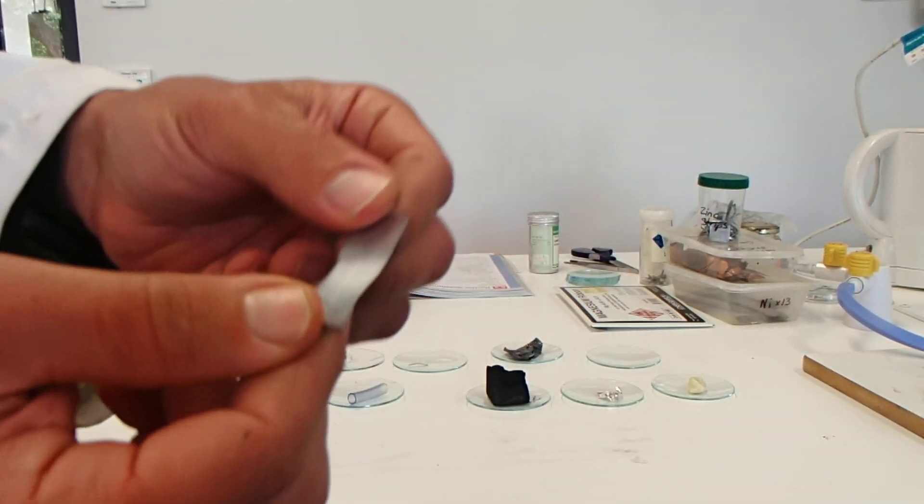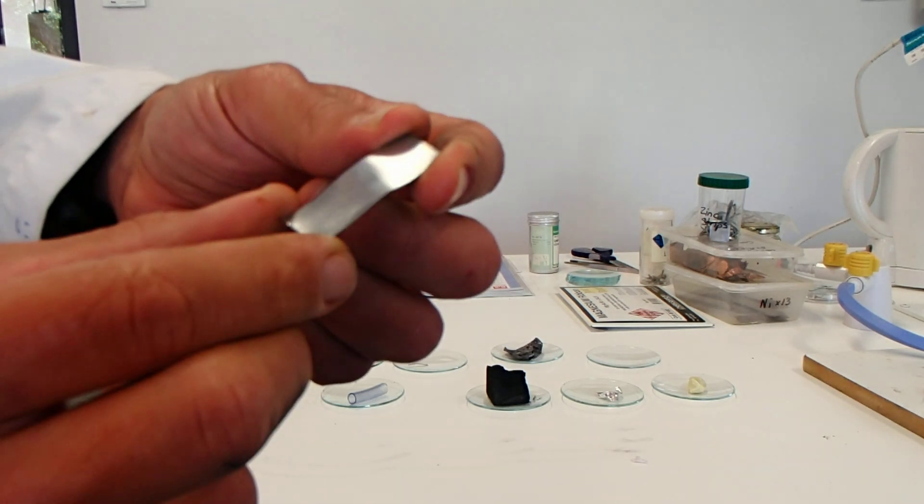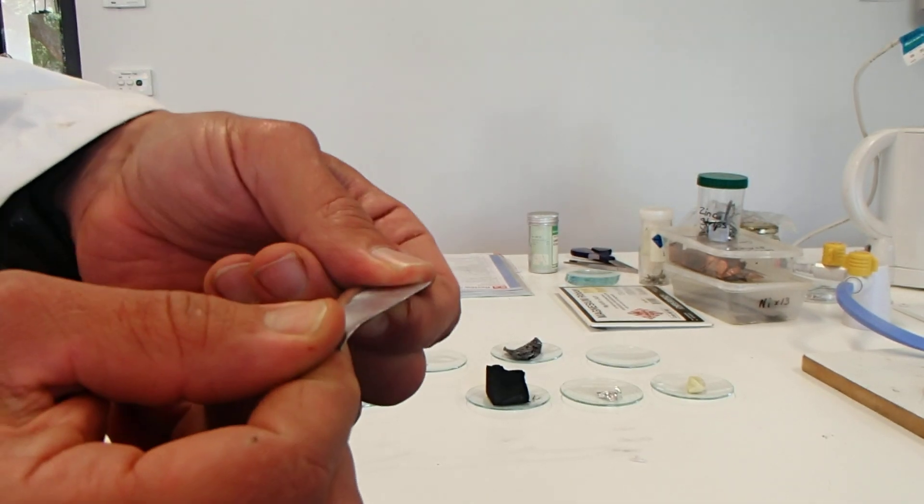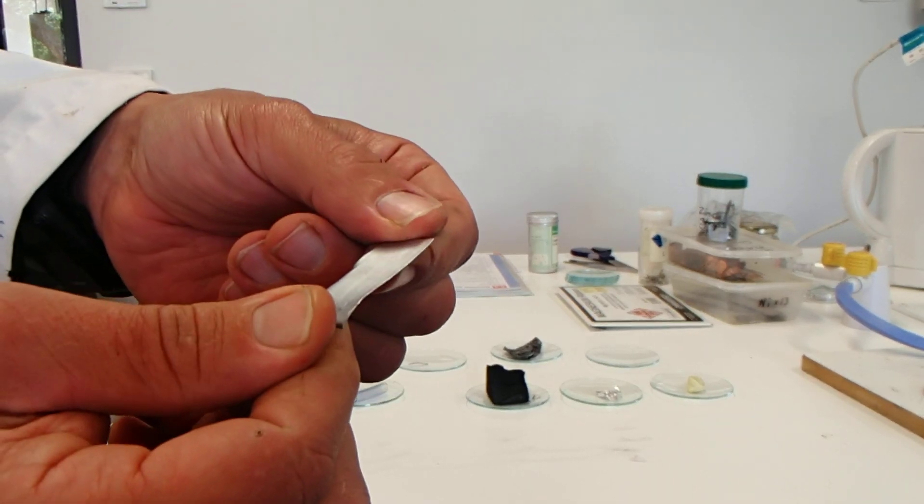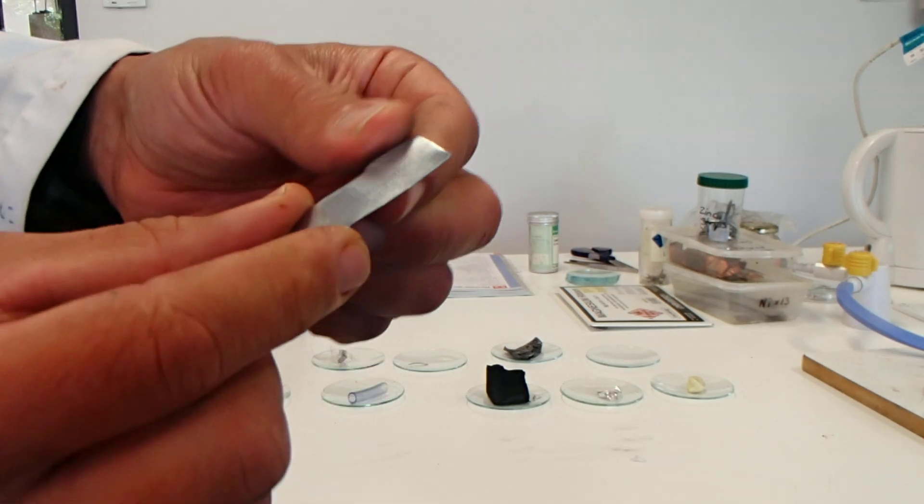Next we have zinc, almost the same as tin. I'd say more shiny, more blue in color, a little bit brighter silver, a little bit shinier, still light in weight. So that's zinc.